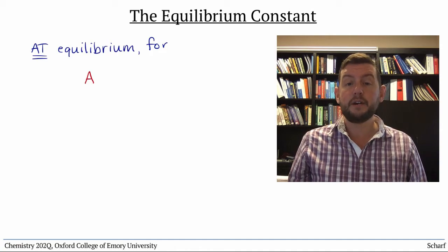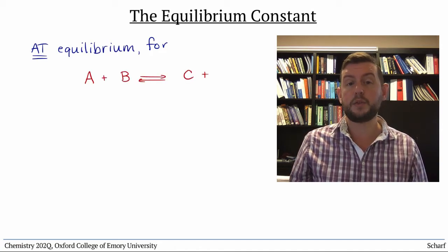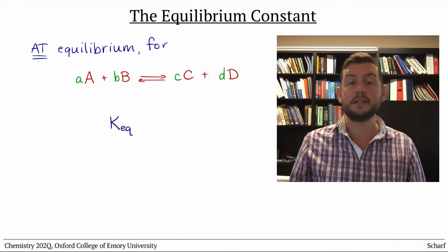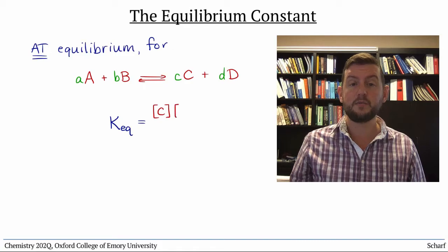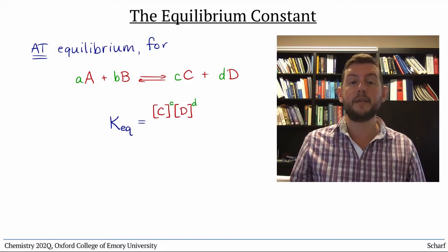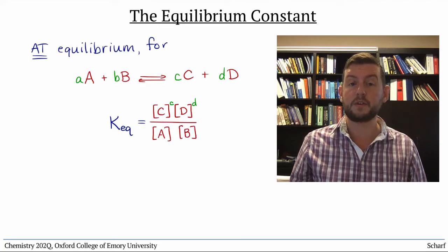For the generic reaction aA plus bB goes to cC plus dD with stoichiometric coefficients a, b, c, and d, the equilibrium constant is equal to the concentrations of the products raised to their stoichiometric coefficients divided by the concentrations of the reactants raised to their stoichiometric coefficients.